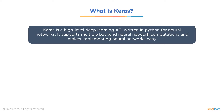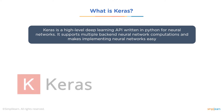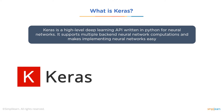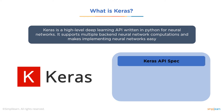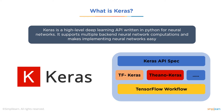Keras is a high-level deep learning API written in Python for neural networks. It has multiple backend neural network computation support, making implementing neural networks easy. Keras is a powerful and easy-to-use free open source Python library for developing and evaluating deep learning models. It is the high-level API of TensorFlow 2 — an approachable, highly productive interface for solving machine learning problems with a focus on modern deep learning.